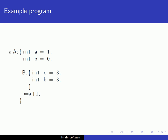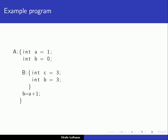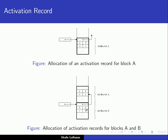Block A starts executing and memory for the local variables A and B needs to be allocated. We can think of this as being allocated using an activation record, which stores information local to the block. On the runtime stack, we have an activation record for block A containing memory space for local variables B and A. Then block B starts executing, so it needs to be pushed onto the stack. B contains local information for variables C and B, so B and C are on the stack.